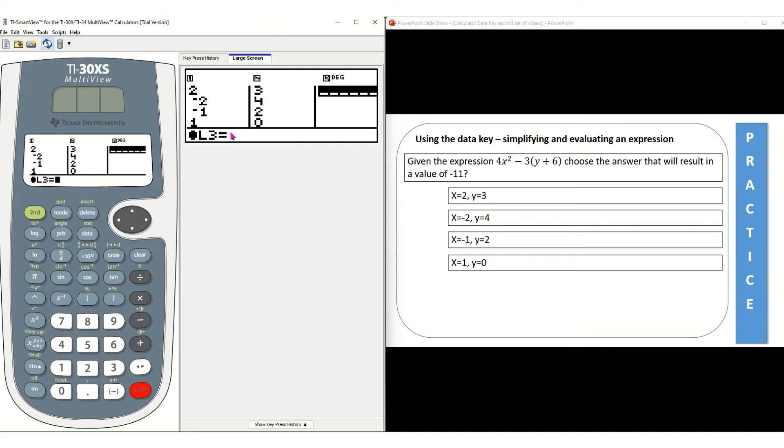Remember, we entered the x values in L1, y values in L2. So when we enter the expression we're not entering 4x squared minus 3y plus 6. We're gonna enter 4L1 squared minus 3 times L2 plus 6. So let's take a look at how we do that.